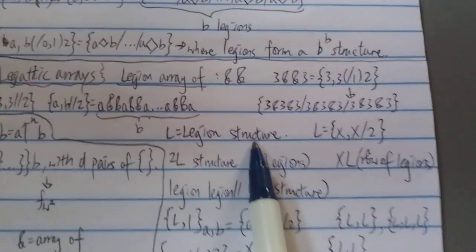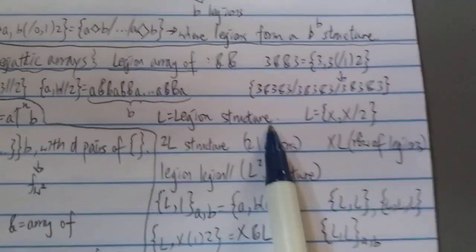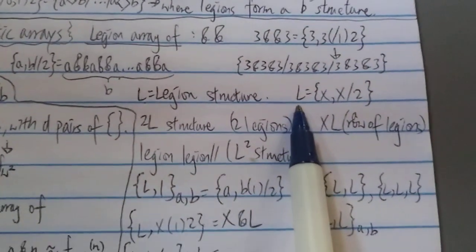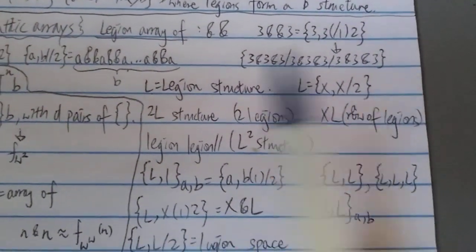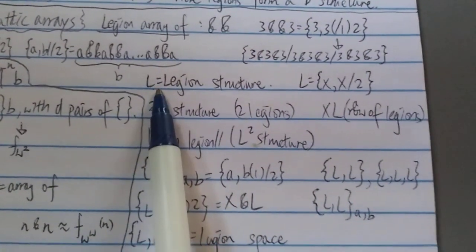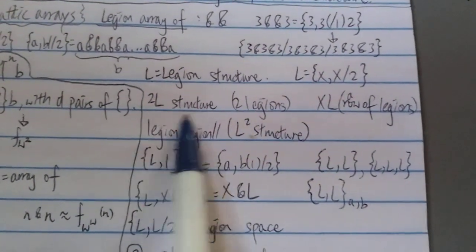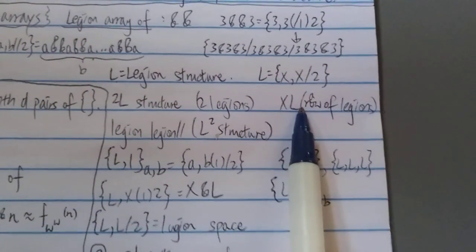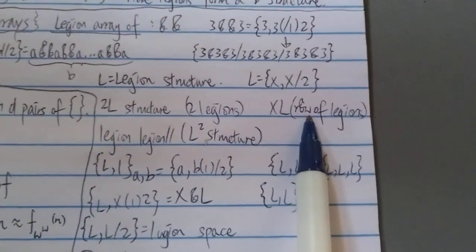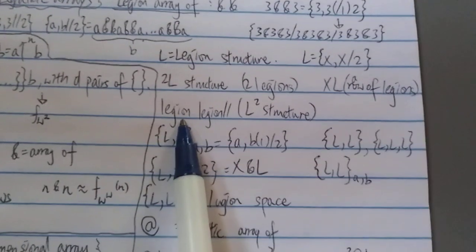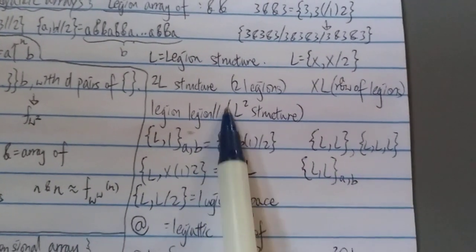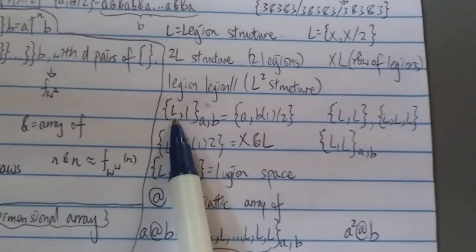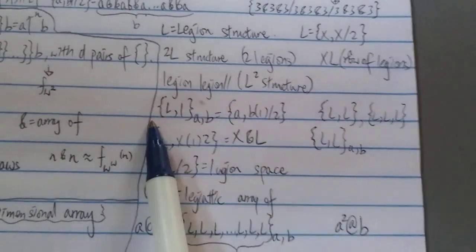L looks familiar — it's in this number we're studying. We can finally see where L came from: it means a 'legion structure.' L is a very big thing — that's all I can tell you. L equals something like this. Why stop at L? You can have a two-L structure meaning two legions, then XL rows of legions, then a legion-legion slash-slash structure which is like an L-squared structure.